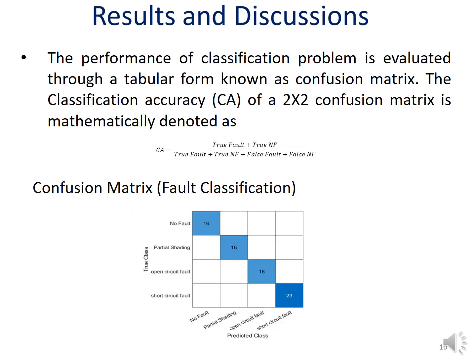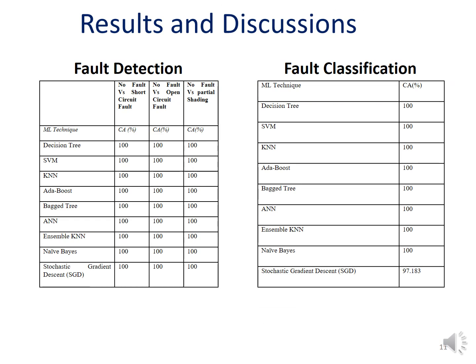For results and discussion, the performance of the classification problem is evaluated using a confusion matrix. The classification accuracy for a 2x2 confusion matrix is mathematically denoted by the given formula. We obtained approximately 100% classification accuracy. For fault detection — no fault versus short circuit, no fault versus open circuit, and no fault versus partial shading — the proposed methodology achieved 100% accuracy. Similarly, fault classification also achieved 100% accuracy, except for the Stochastic Gradient Descent method which achieved approximately 97.183%.